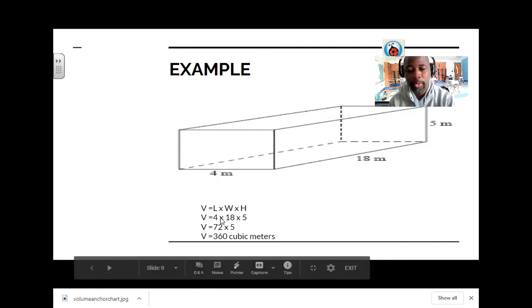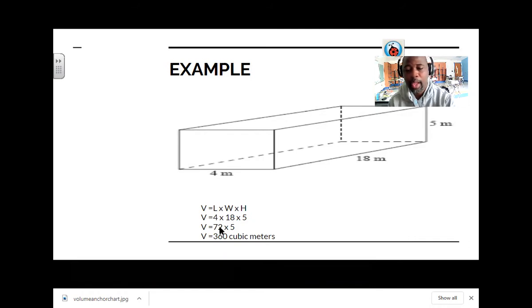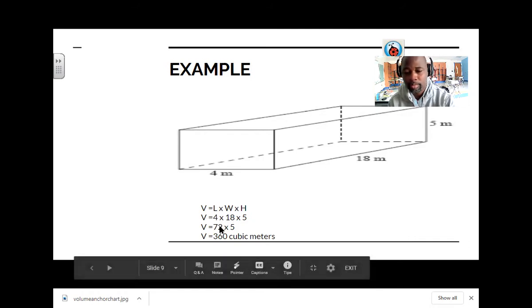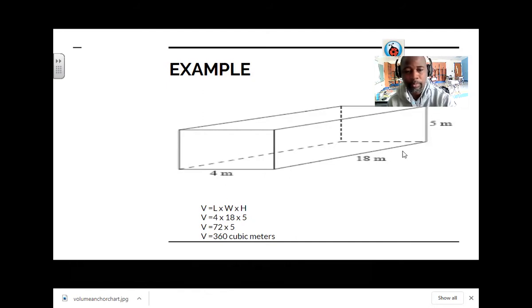First we're going to do 4 times 18, which equals 72. And then we're going to bring this 72 down, and we're also going to bring our 5 down. So now it's 72 times 5. So the answer to this question is going to be volume equals 360 cubic meters. Cubic because we're doing 3 sides.